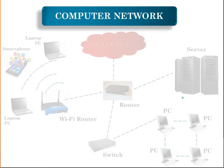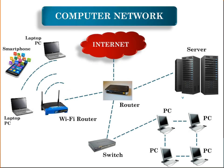Now let's see what a computer network is. A computer network is a collection of computers and devices connected to each other. The sender sends the request in the form of a data packet which is routed throughout the network. The network allows computers to communicate with each other and share resources. The devices are connected with each other through wired and wireless connections.